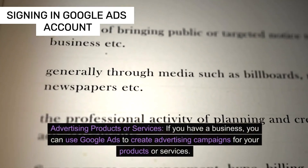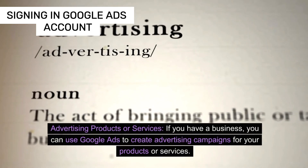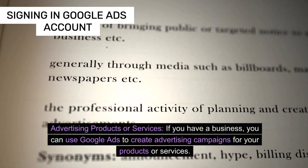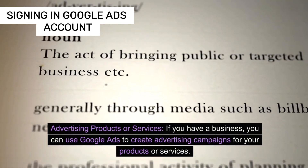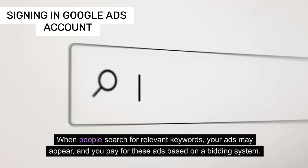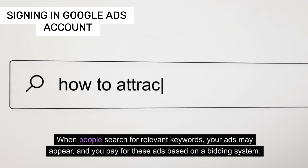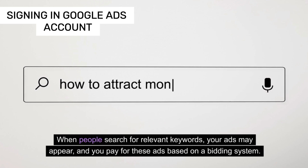Advertising products or services: if you have a business, you can use Google Ads to create advertising campaigns for your products or services. When people search for relevant keywords, your ads may appear and you pay for these ads based on a bidding system.